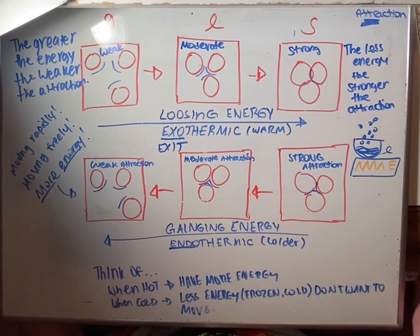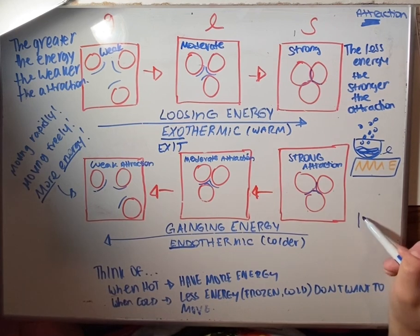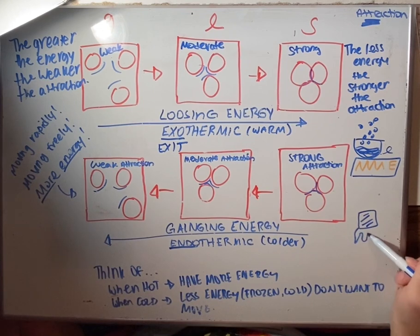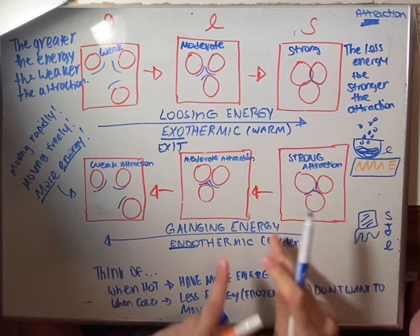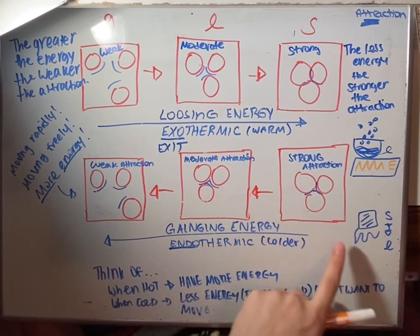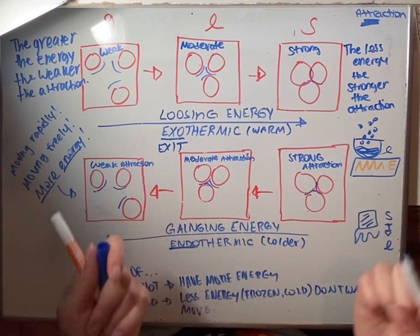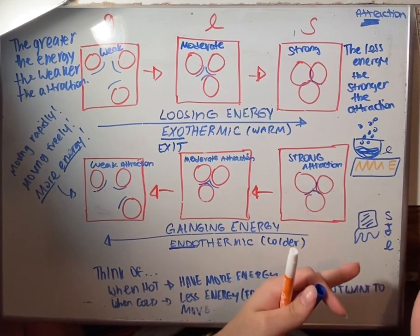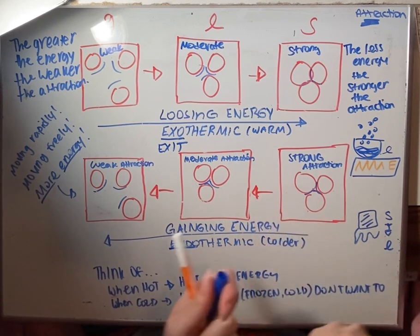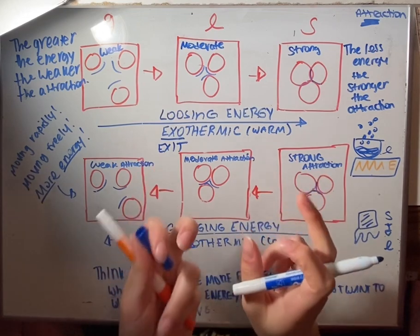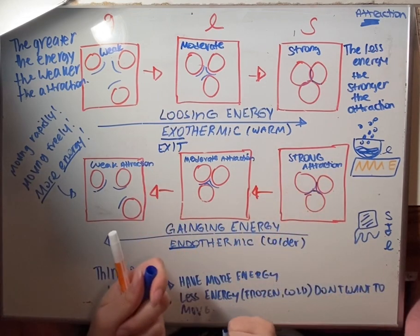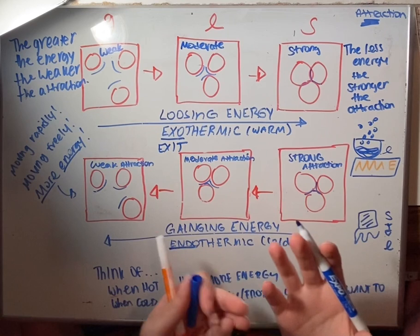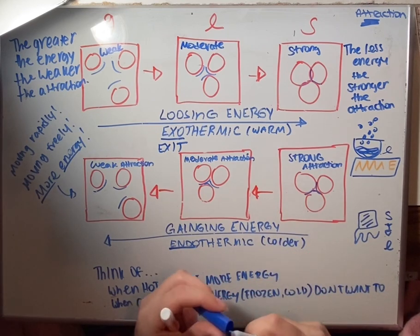Another example of endothermic would be ice melting. As your ice melts, you're going from a solid to a liquid, and it's actually gaining energy. The energy is being gained — consumed by the ice — meaning it's melting basically from the inside.